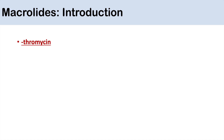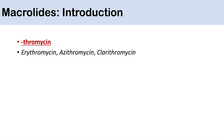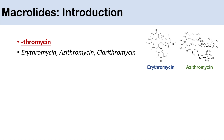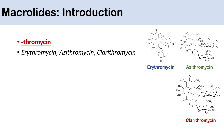Hey everyone, this lesson is on the macrolide antibiotics. The macrolide antibiotics all end in the suffix -thromycin. Examples of the macrolides include erythromycin, azithromycin, and clarithromycin. Erythromycin was the first original macrolide antibiotic, and azithromycin and clarithromycin were derivatives of the original erythromycin.